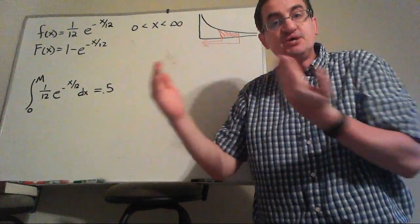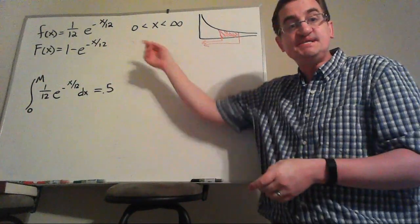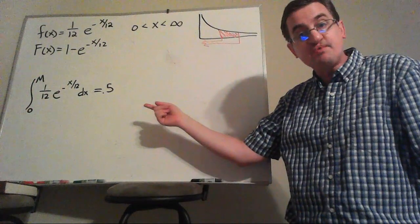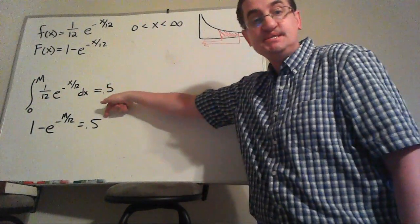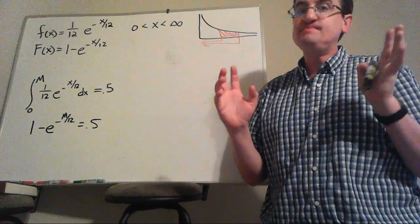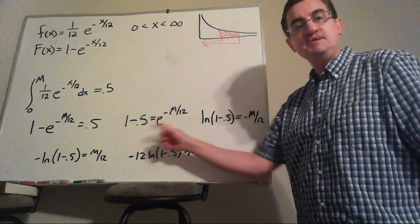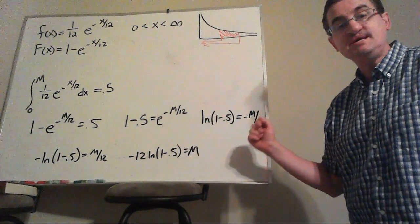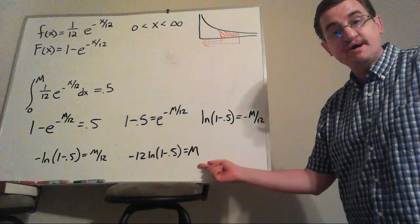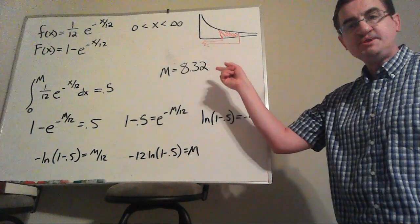This doing the integration up to some value is the same as the F of x. So we could rewrite this as the F of x at m needs to equal 50%. And yeah, now you've got to try to solve for m. Moving things to the other side, that's going to involve a natural log to counteract the e. But we can finally solve for m as 8.32.